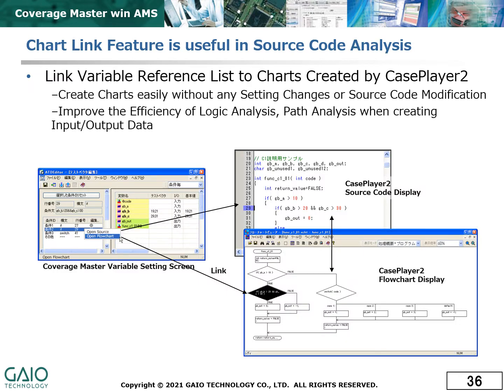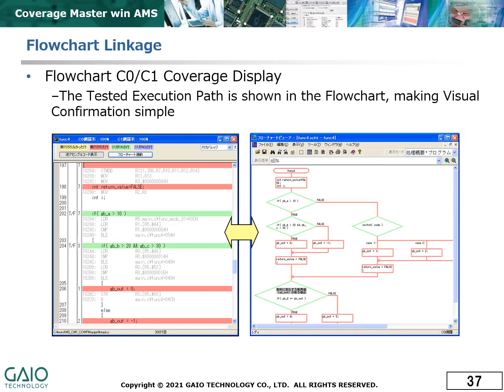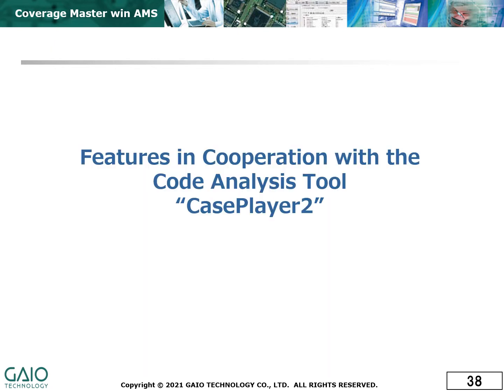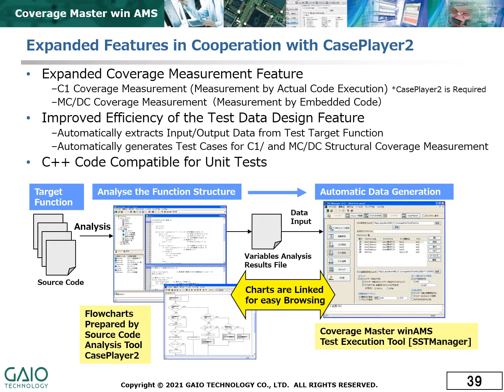CoverageMaster WinAMS also includes a chart link feature, which visually represents the condition tested in each test case in the flowcharts created by our code analysis tool Case Player 2. Similarly, the tested execution path can also be shown in the flowcharts, which should greatly facilitate the explanation of test cases in design reviews. The following features make use of the abilities of Case Player 2. The measurement of C1 coverage and MCDC coverage is done using the code analysis capabilities of Case Player 2, and this can also improve the generation of test cases for these coverage levels. Case Player 2 also enables analysis of C++ code.